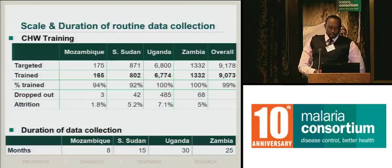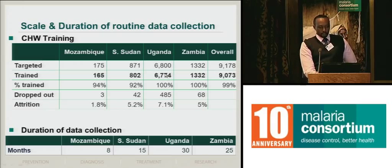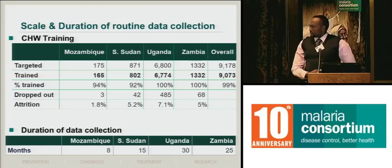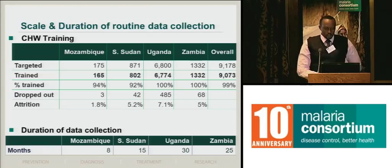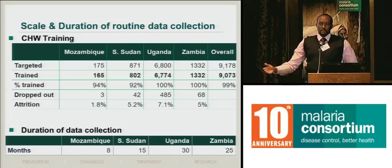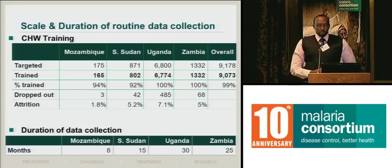Moving on to the scale and duration, particularly with the trainings: we've trained close to about 9,000 community health workers across the four countries, and the majority has been in Uganda. The targets have been met — for example, in Uganda, two community health workers per village trained in ICCM, so from about 3,400 villages we got the targets. The attrition has been very good, between 1% and 7%, which is quite impressive cumulatively over time. This emphasizes that with a CHW program entrenched within the main system, attrition could be much better than expected.